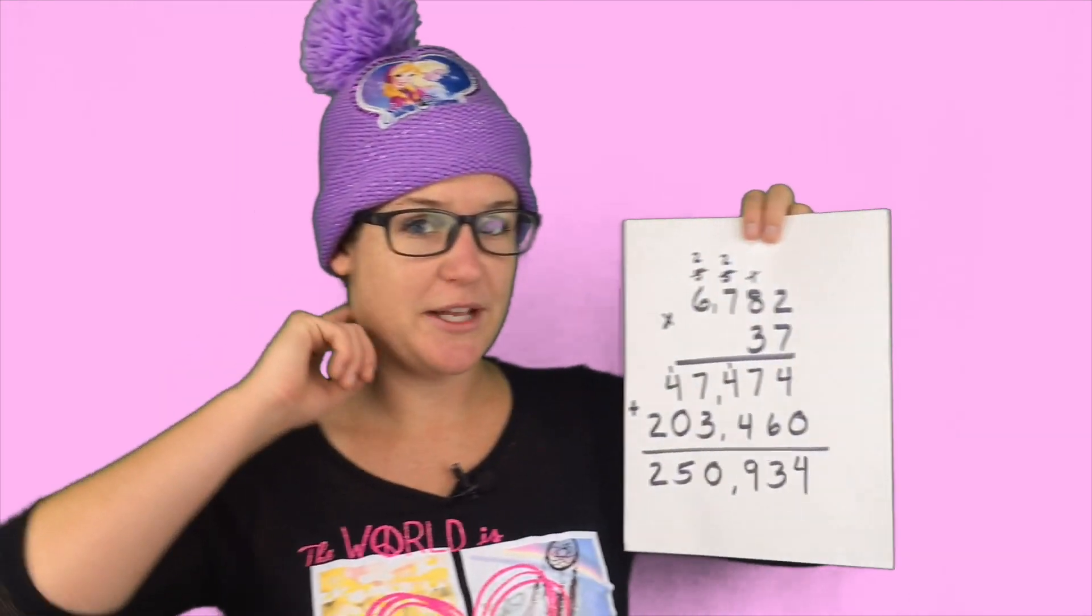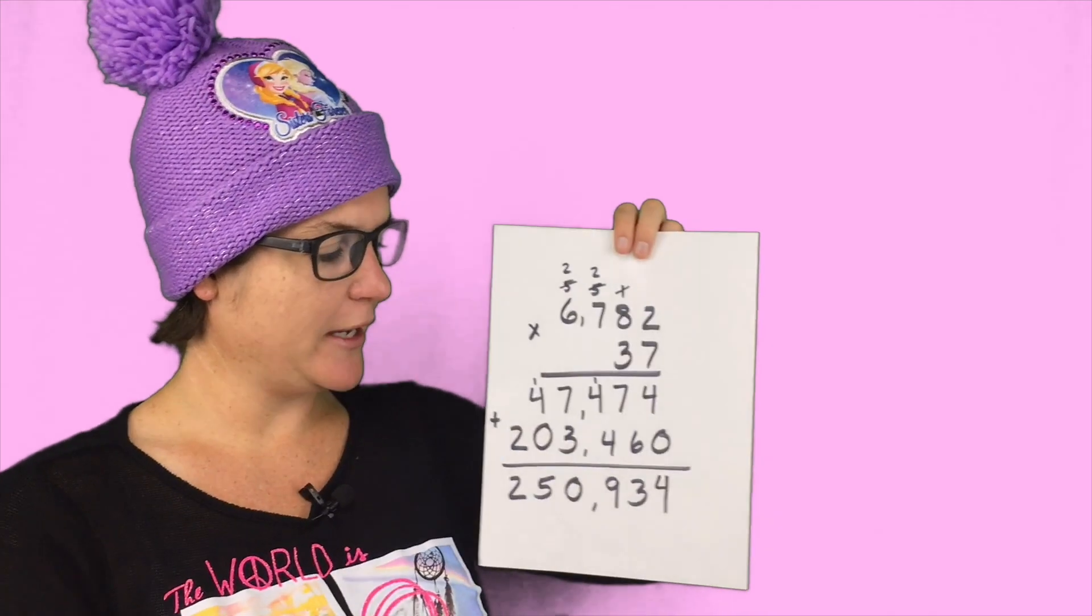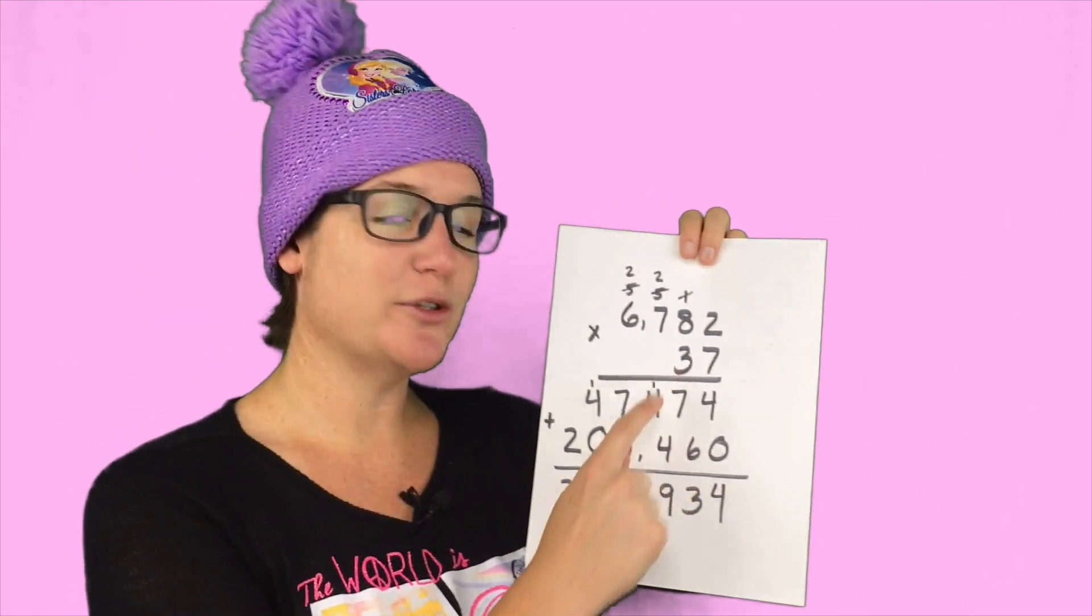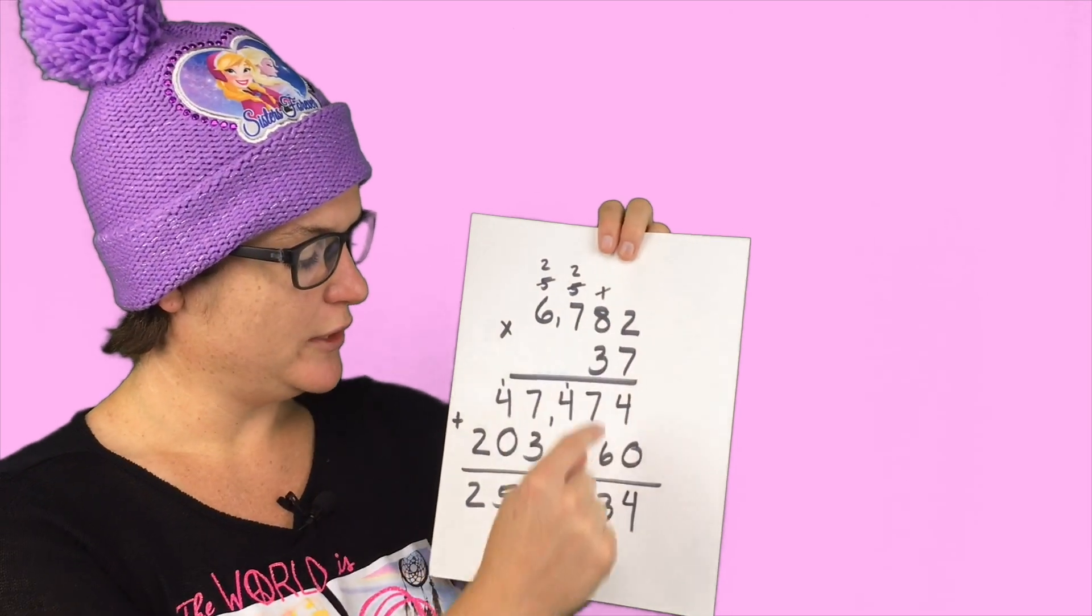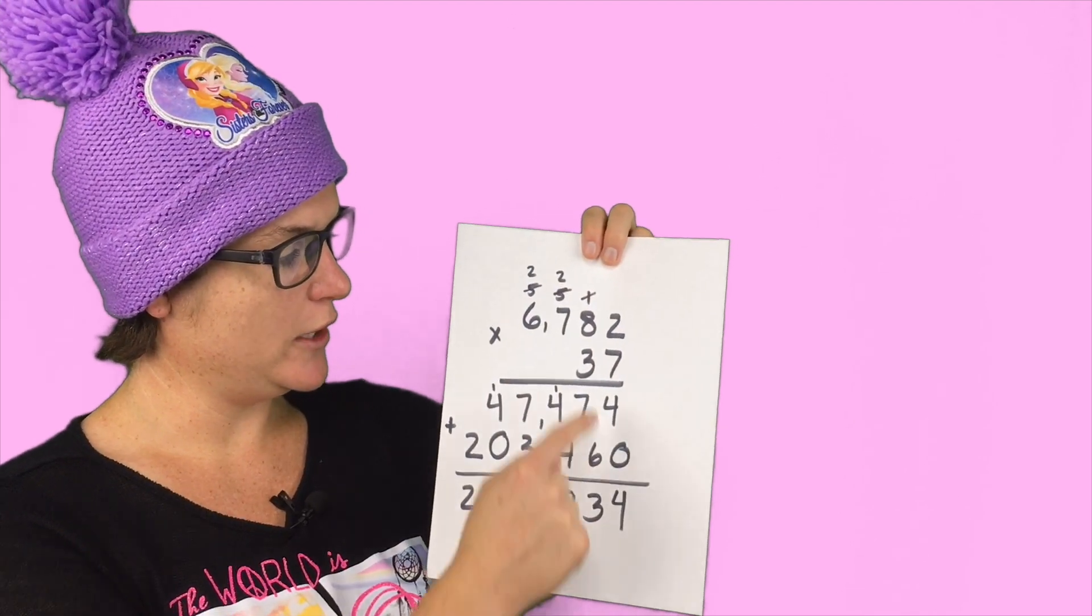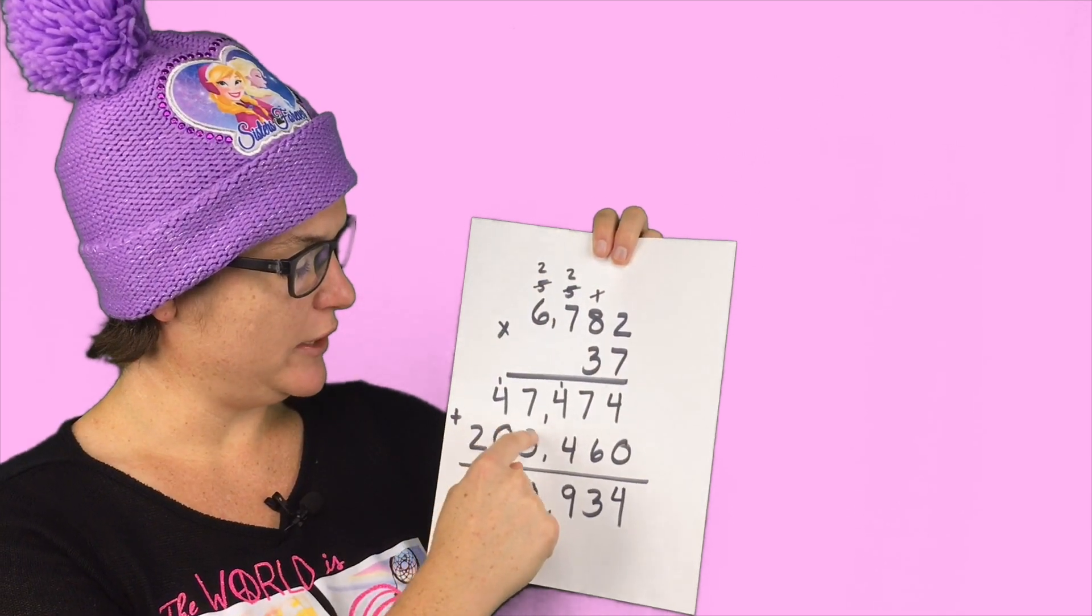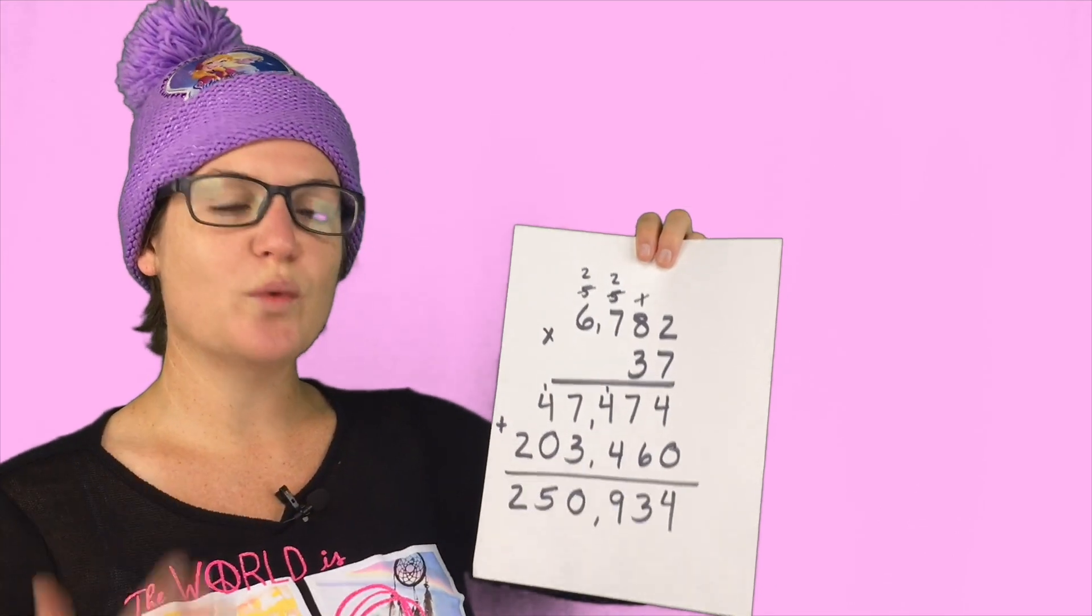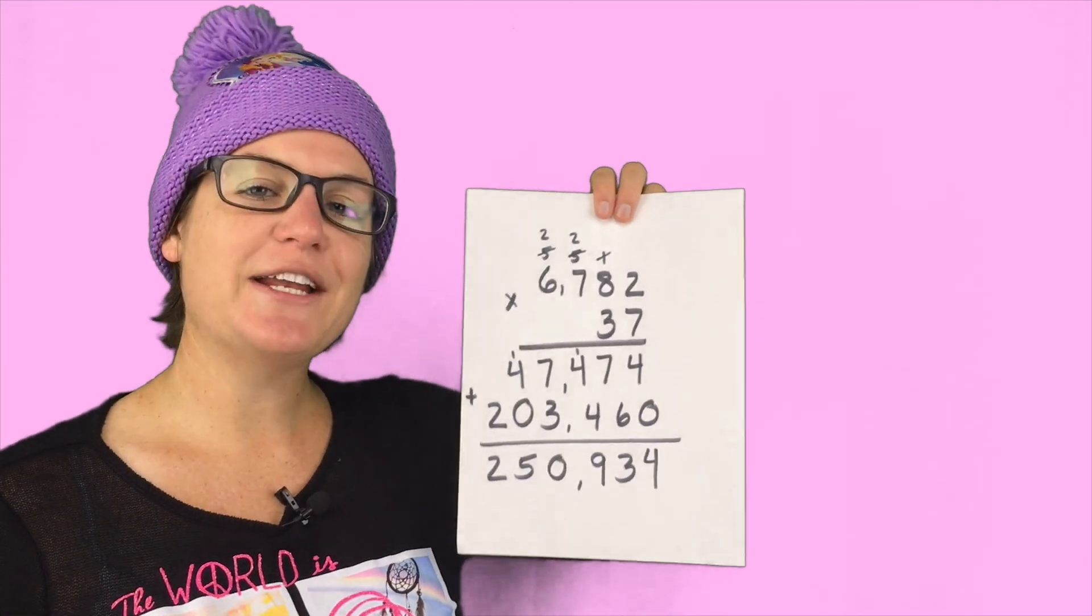So now I get my problem set up for the next one. So I cross out these up here where I'm regrouping and I put a 0 here to hold the place because I'm not really multiplying by 3 here, I'm actually multiplying by 30, so that just helps me there. Okay, so 3 times 2 is 6. 3 times 8 is 24. Carry the 2. Bring down the 4. 3 times 7 is 21 plus 2 is 23. So 3 down here, carry your 2. 3 times 6 is 18 plus 2 is 20. And then when I go to add them up, I get 250,934.